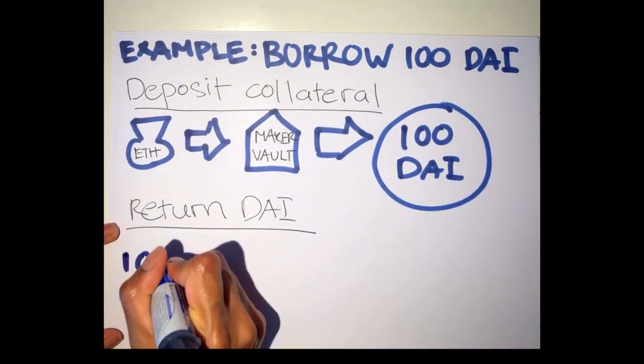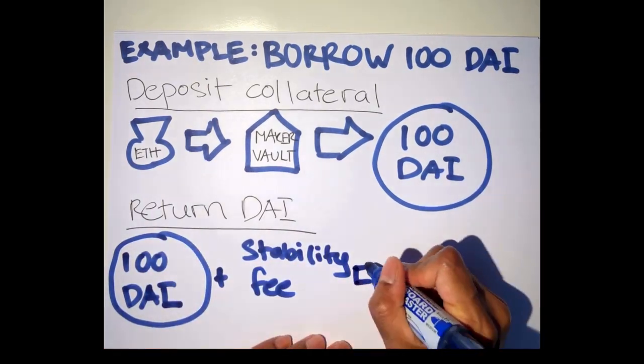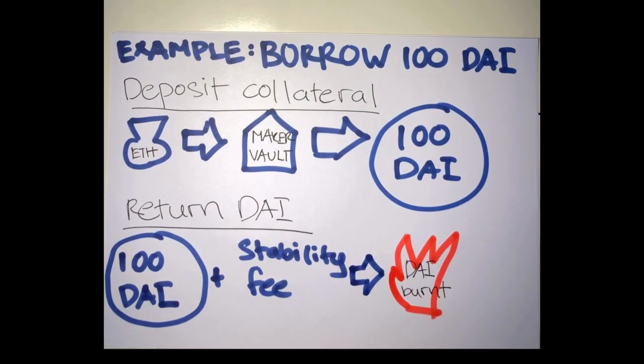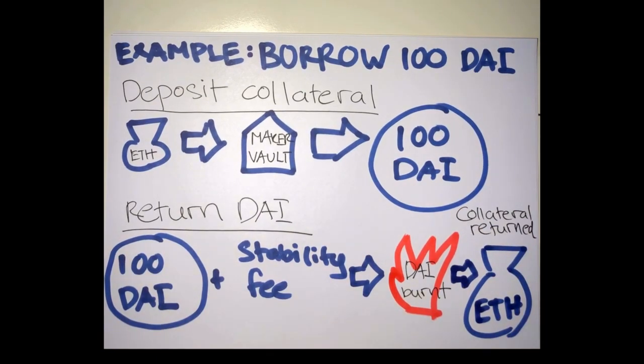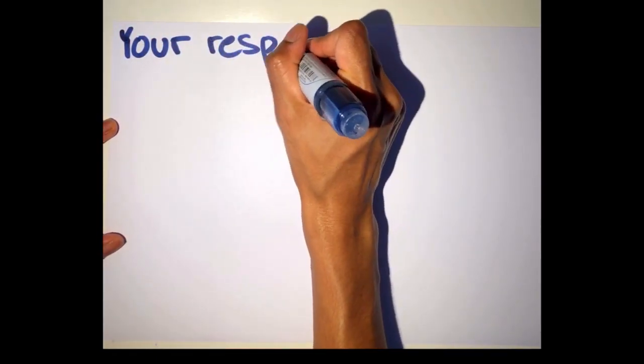So when you return the DAI, you pay a stability fee, the DAI gets burnt and your collateral will be returned to you. Let's look at the responsibility that comes with borrowing DAI.